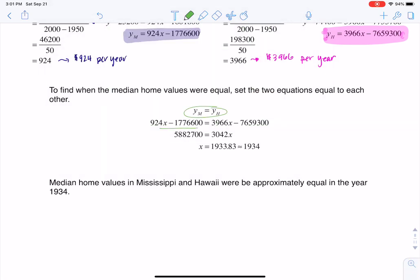So here's Mississippi on the left, here's Hawaii on the right. Do a little algebraic manipulation. And then I find this X value of 1933.83, which is approximately the year 1934.